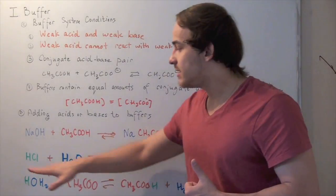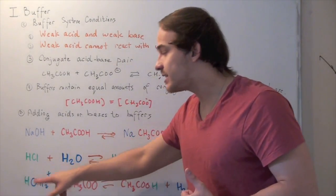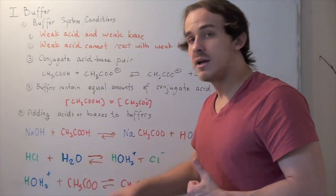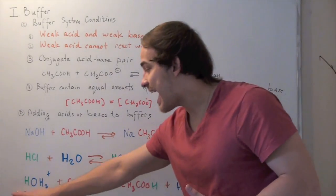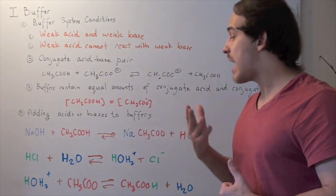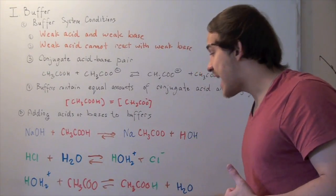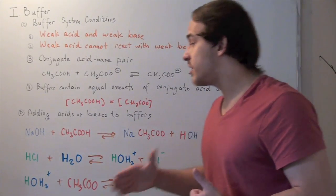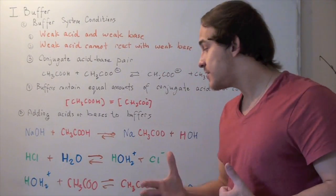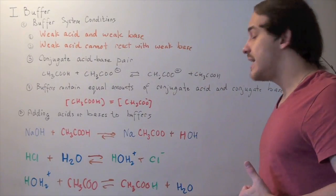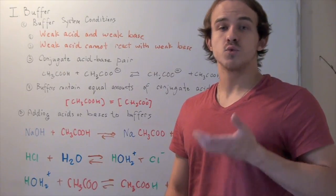Likewise, let's see what happens when we add acid to our buffer system. Hydrochloric acid first reacts with water, producing hydronium ion and chloride ion. Next, this acid molecule reacts with our conjugate base, forming water and our conjugate acid. Once again, before this acid molecule can affect our solution and decrease the pH, it's neutralized into water and our conjugate acid. And that's how buffer systems work.